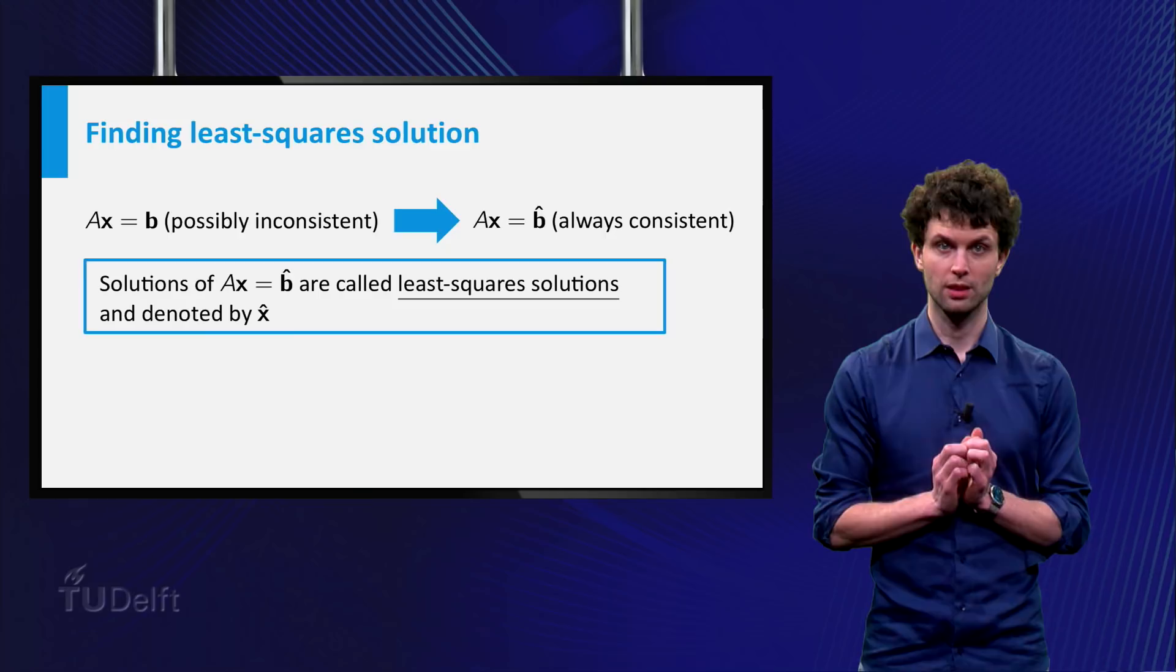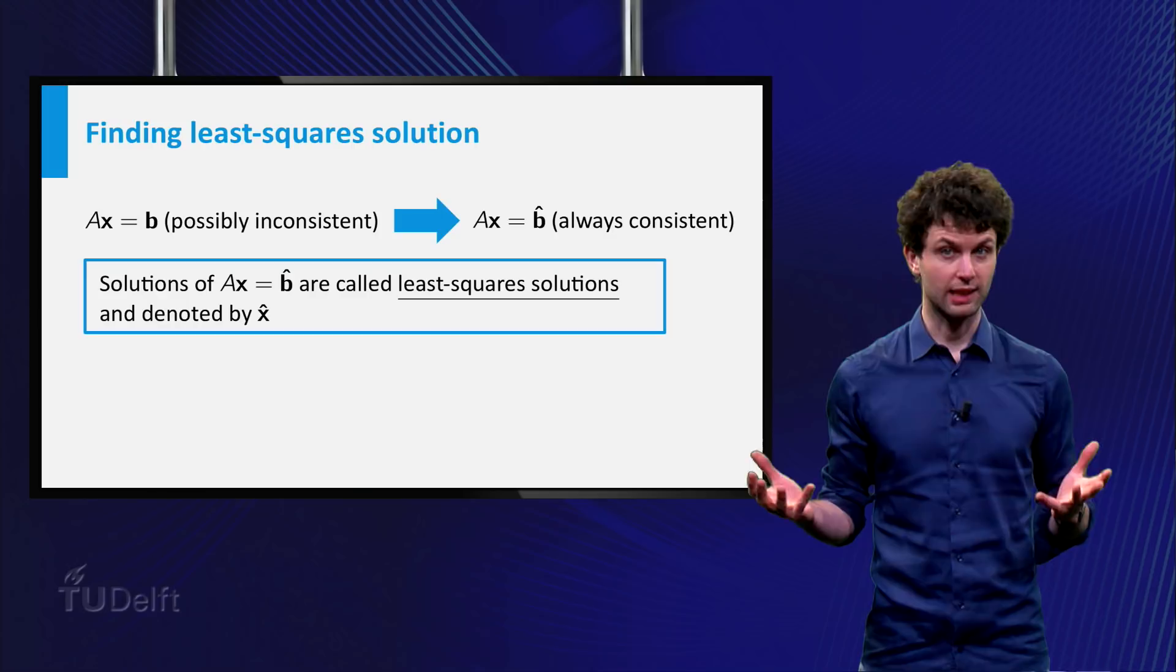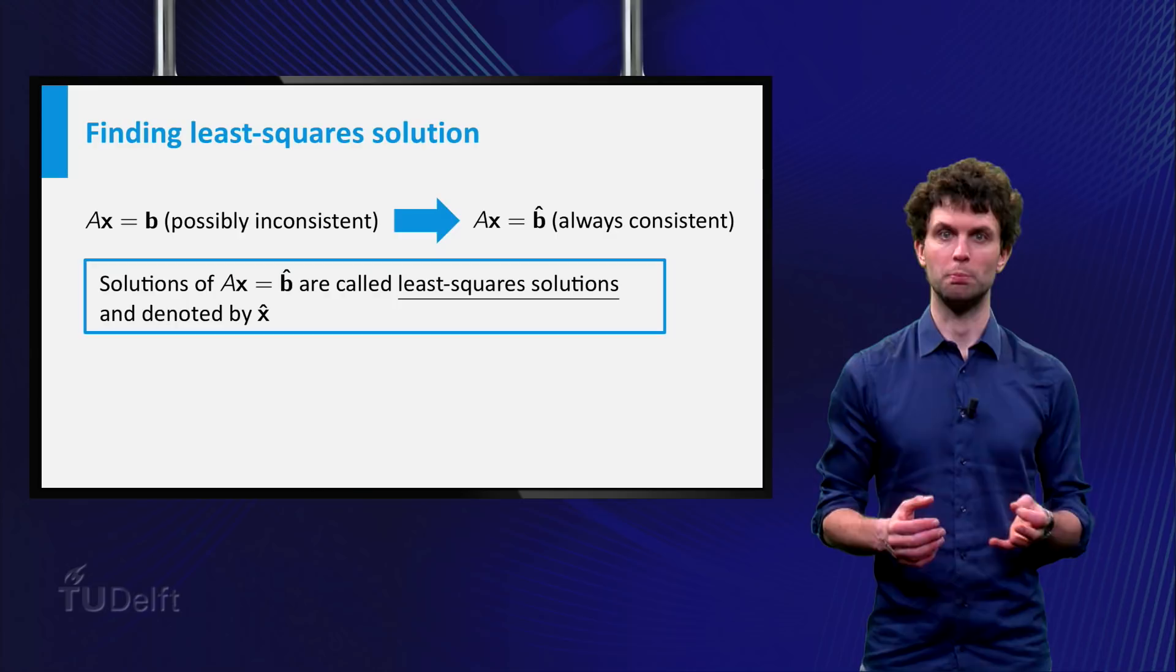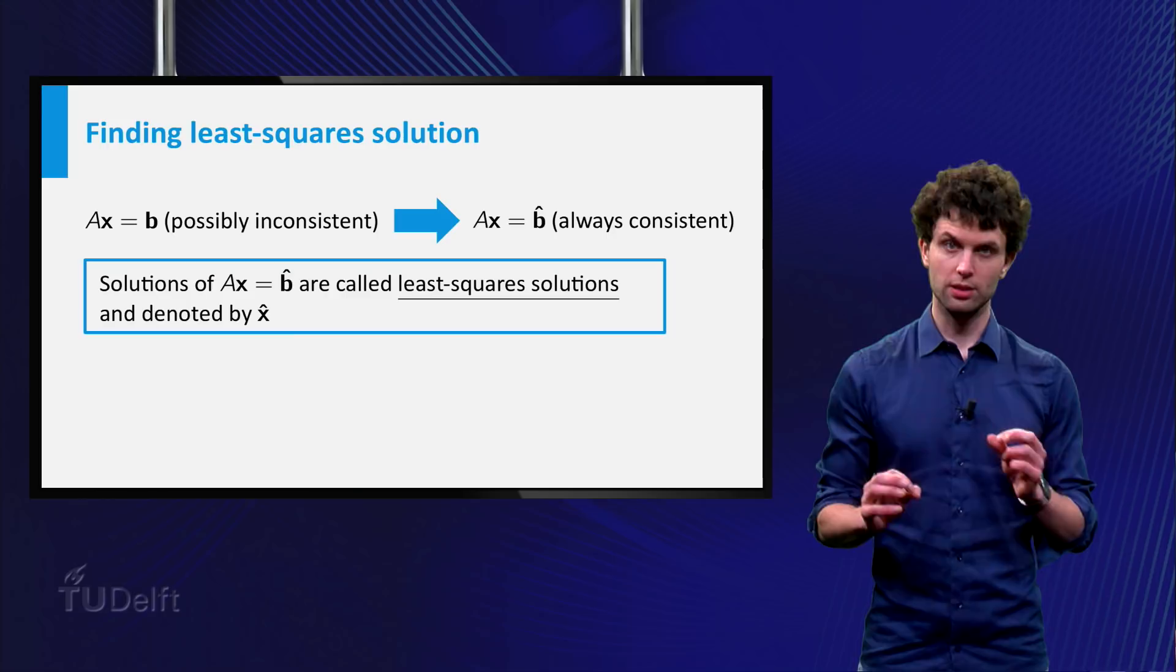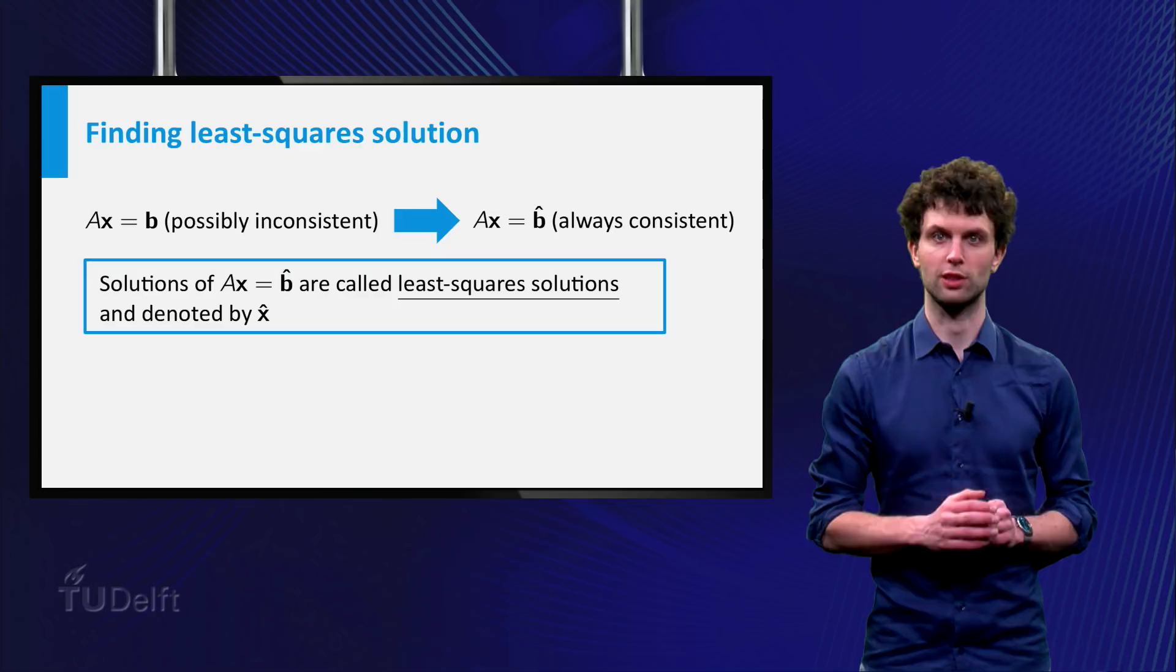So a system Ax = b is replaced by the system Ax = b̂, which is always consistent. The solutions of this system are denoted by x̂, and they are the so-called least square solutions of the original system.